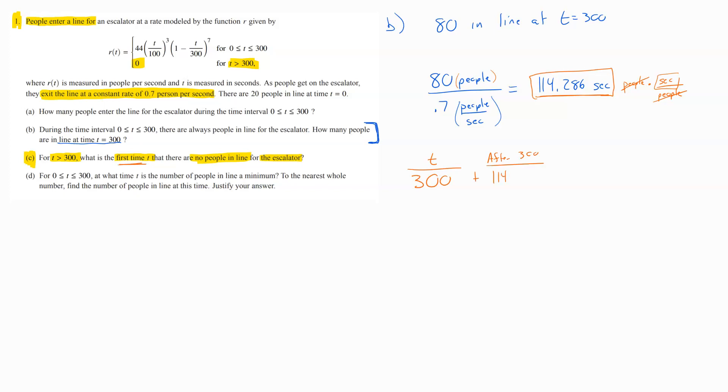So, you would have to take 300, add it to this. And so, in the end, we would have ended up with 414.286 seconds until we get to 0 people. So, don't forget when you do a problem like this that you still have all that time from 0 to 300 still counts towards the final amount of time until you get to 0 people in line.